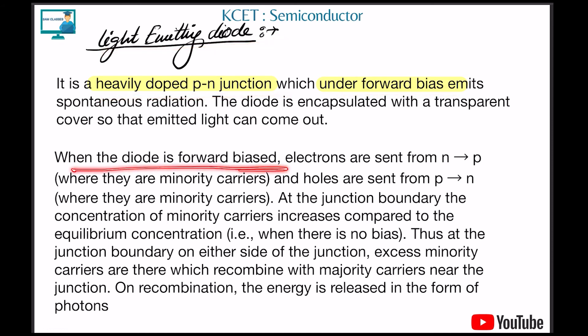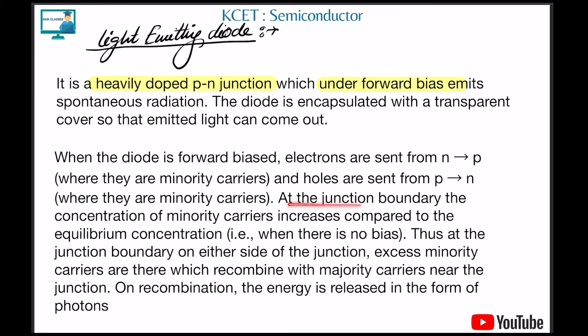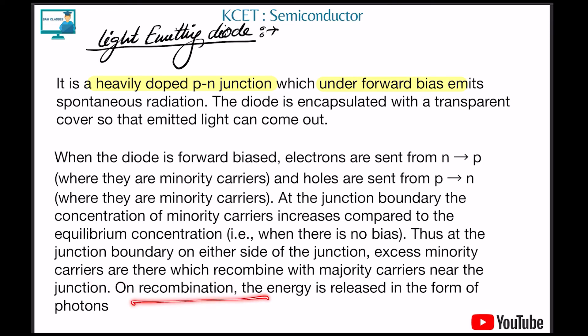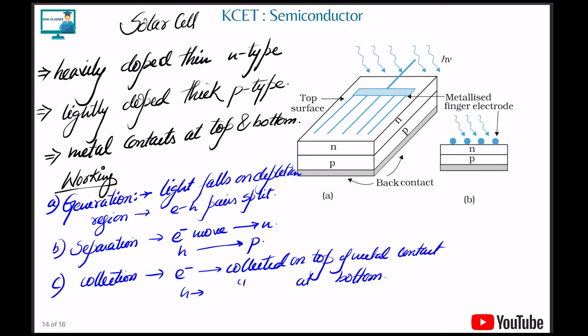In an LED, when forward biased, electrons are sent from n to p and holes from p to n. At the junction, the concentration of minority carriers increases compared to equilibrium. The excess minority carriers recombine, and due to this recombination the energy is released in the form of photons — that's how an LED emits light.